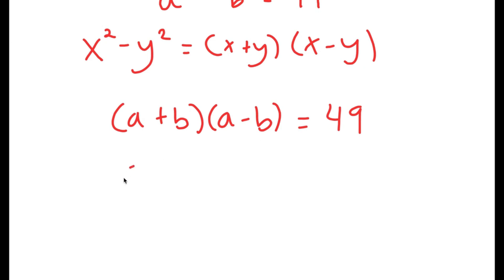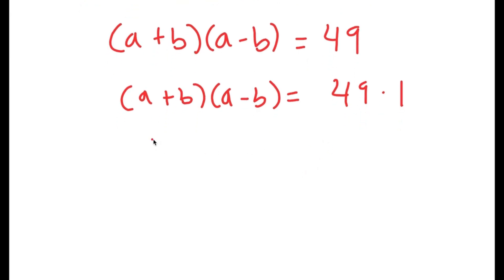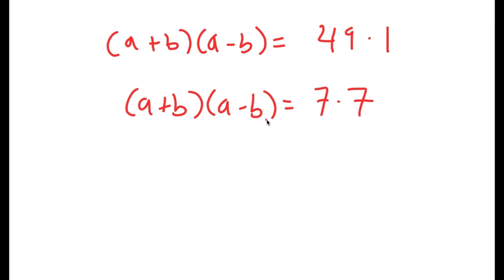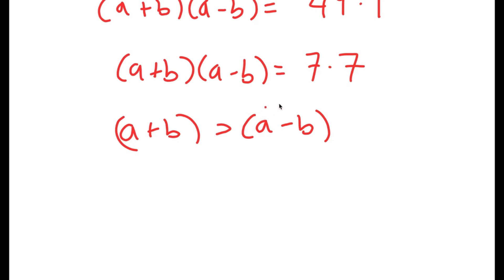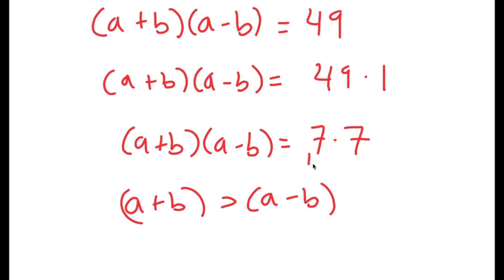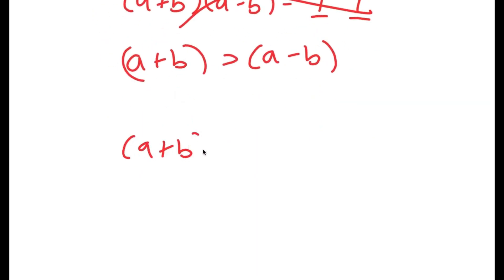From here, I can rewrite 49 as 49 times 1. And I can also rewrite it as 7 times 7. Now, we know that a plus b is going to be greater than a minus b. So we can't rewrite a plus b times a minus b as 7 times 7, since 7 and 7 are equal. So this possibility is out. 49 times 1 is the only possibility, meaning a plus b times a minus b equals 49 times 1.